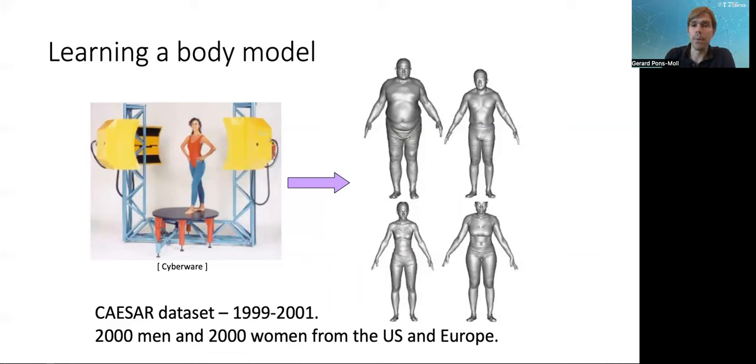They built this data set called the CAESAR data set, which has been instrumental to build body models, and it still is. But it's worth noting that this data set doesn't reflect the population of the world. It reflects the population of the US and Europe in 1999. The body shapes, the demographics have changed. And also there's many ethnicities that are not represented in this data set.